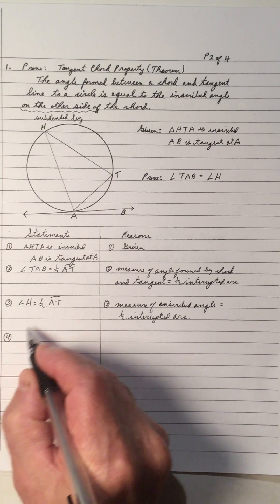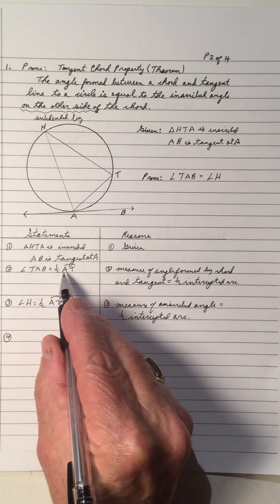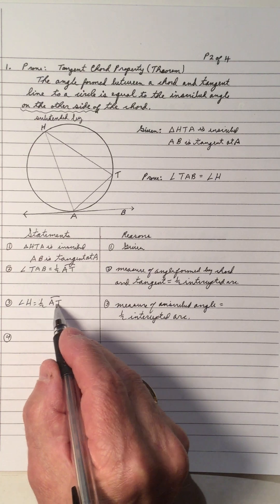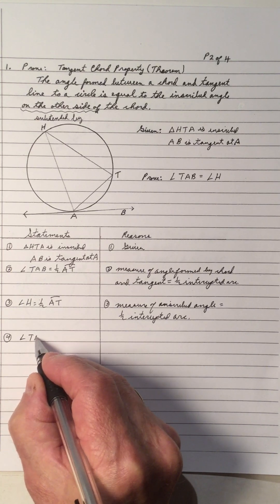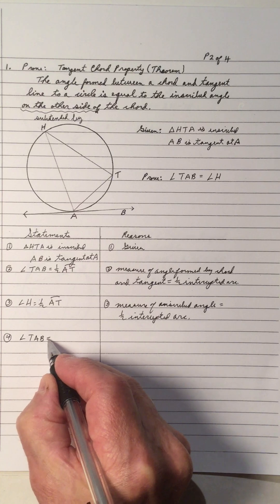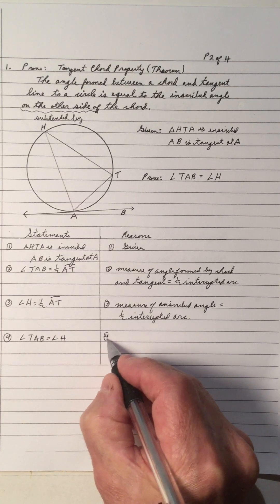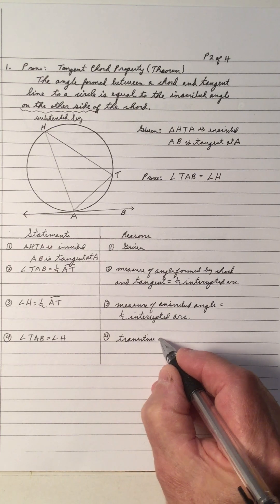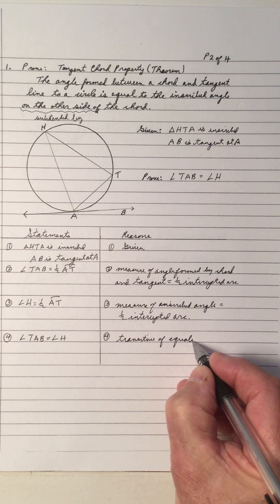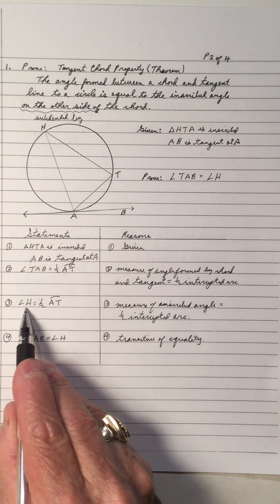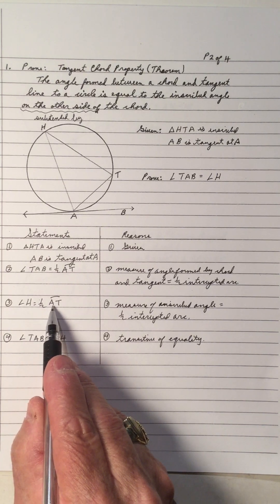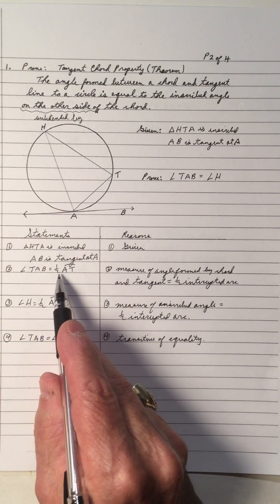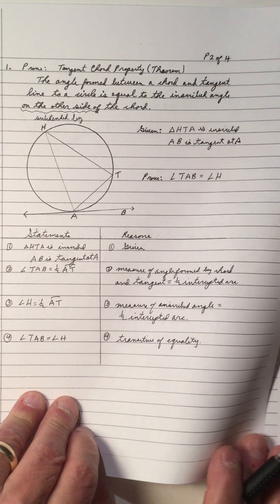As a result, angle TAB is half of arc AT, and angle H is also half of arc AT — so angle TAB equals angle H. We can call this the transitive property of equality: both angles equal half of the same arc, so they are equal to each other.